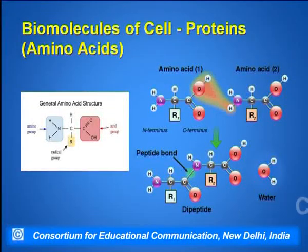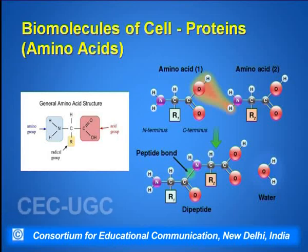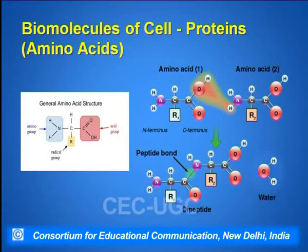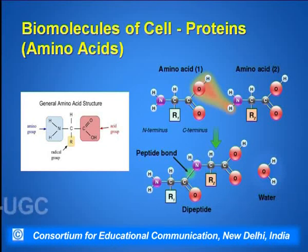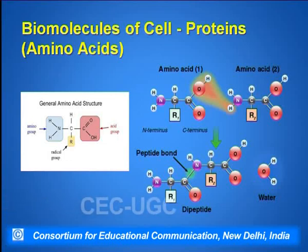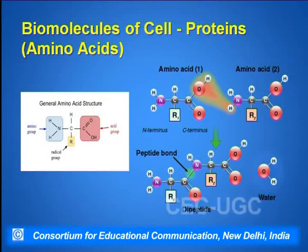All these enzymes and various biological activities within the cells are carried out through the various biomolecules present within the cell. Let us take up some of the important biomolecules of the cell. The first important biomolecule of the cell are the proteins, which are basically made up of amino acids.